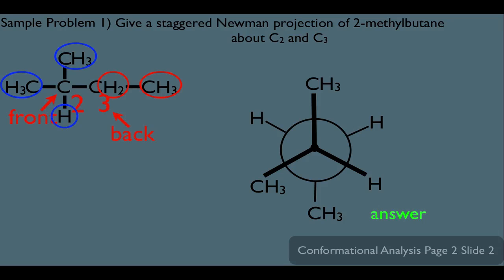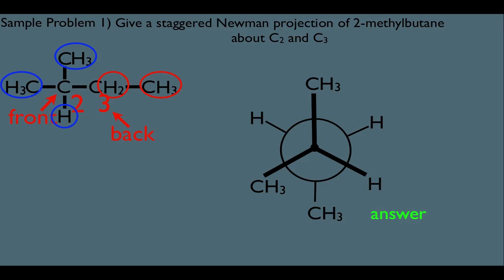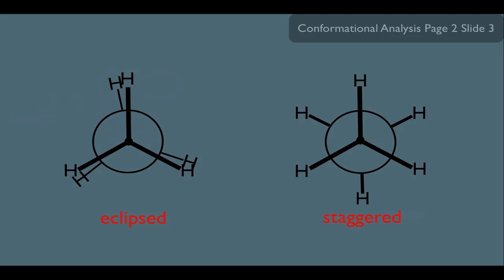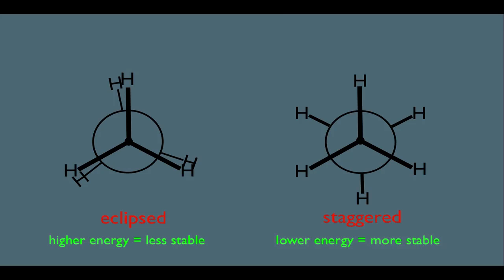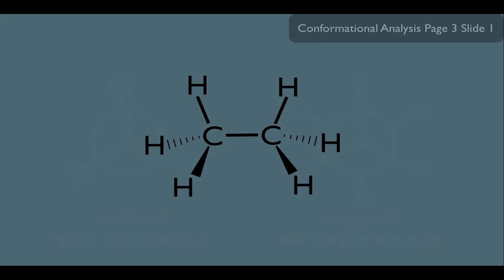This is the first step in doing conformational analysis — we generate the Newman projection of the molecule to get a better look at the various conformations it can attain. Eclipsed conformations are always higher energy or less stable than staggered conformations. This is always the case. But let's understand why the staggered conformation is lower energy. What you see here would be the eclipsed conformation of ethane. Let me rotate the bond between the two carbons and turn this into a staggered conformation.